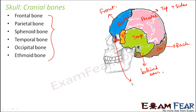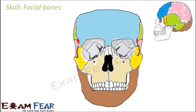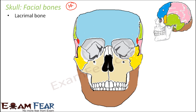Those are the different bones that together form the cranium part of the skull. Now let us have a look at the various facial bones. There are a total of 14 facial bones. The blue part you see is the frontal bone, which is part of the cranial bone. The facial bones are the yellow and brown ones — all of those form the facial bones.